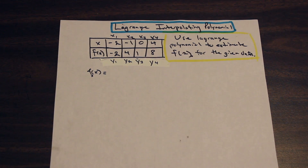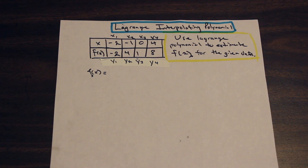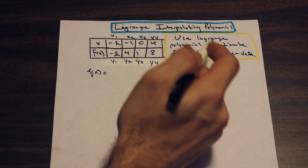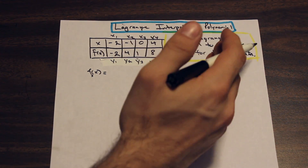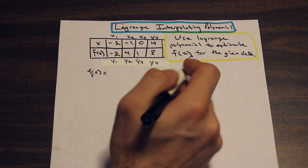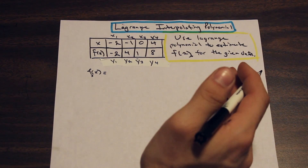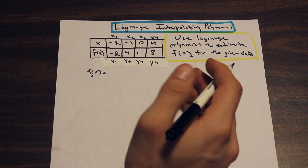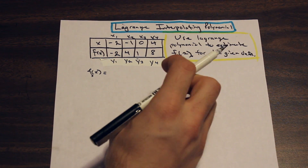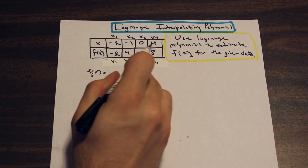Let's read the question: use the Lagrange interpolating polynomial to estimate f(2) for the given data. So what it wants us to do is come up with the Lagrange interpolating polynomial, plug in x = 2, and find the final numerical answer. Let's go ahead and begin.